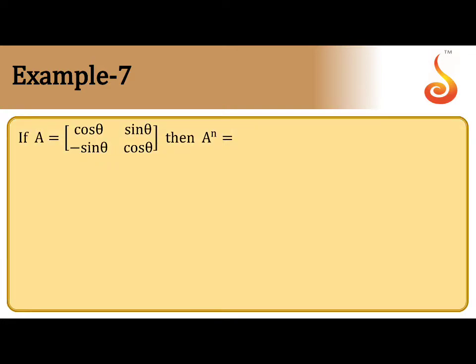To solve this problem, since we cannot find A^n directly, I am taking n equal to 2 first. Put n equal to 2, then it becomes A squared, and A squared means A into A.